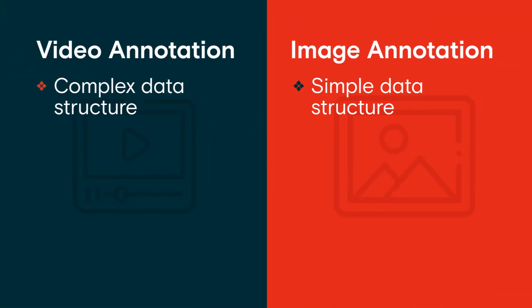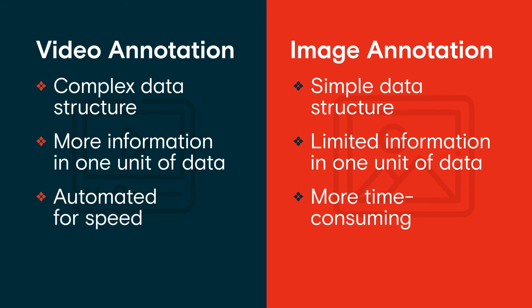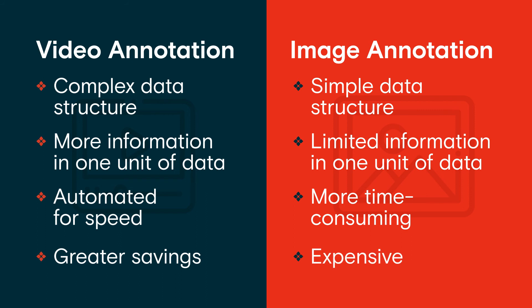Video is a more complex data structure with motion, audio, and images baked in, yet it allows teams building AI to access more information on objects and their environment. In many cases, it provides a better output for machine learning models than images, without adding costs.